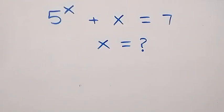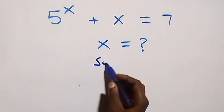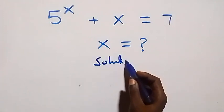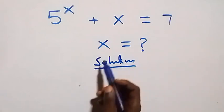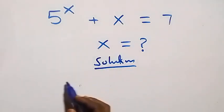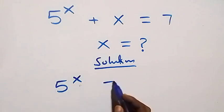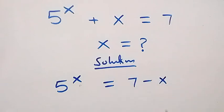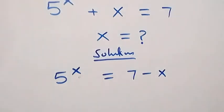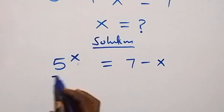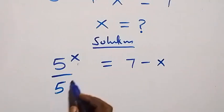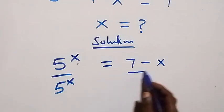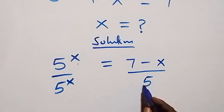Hello, you are welcome. How to solve this nice math problem. From what we have here, let's take X to the right-hand side, then this becomes 5 raised to power X equals to 7 minus X. Next step, divide both sides by 5 raised to power X.